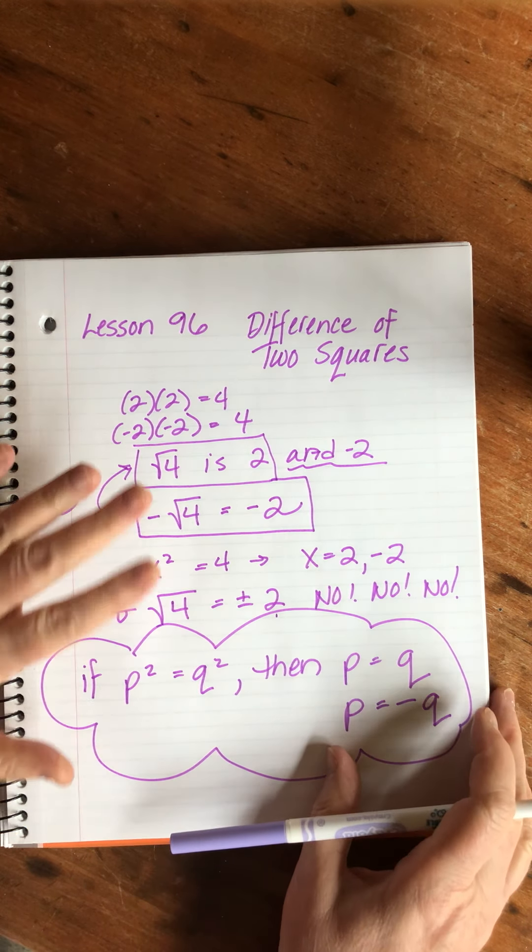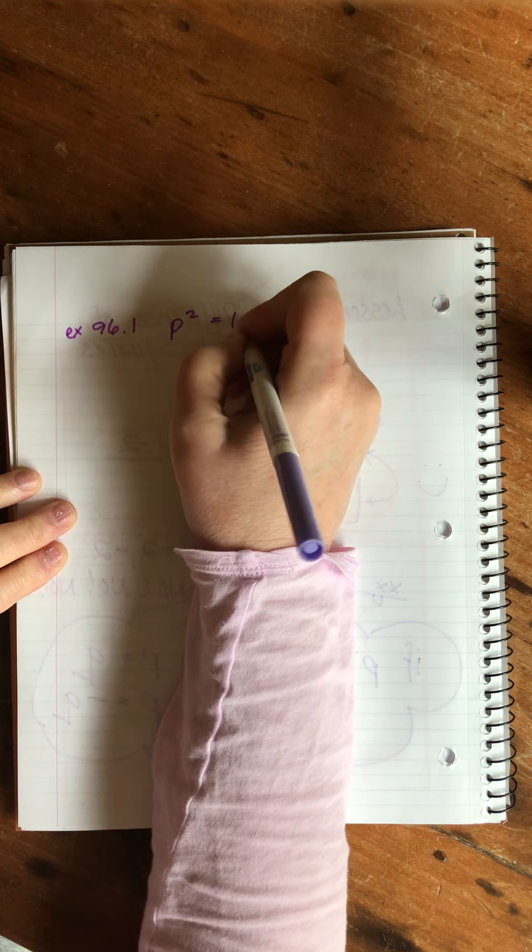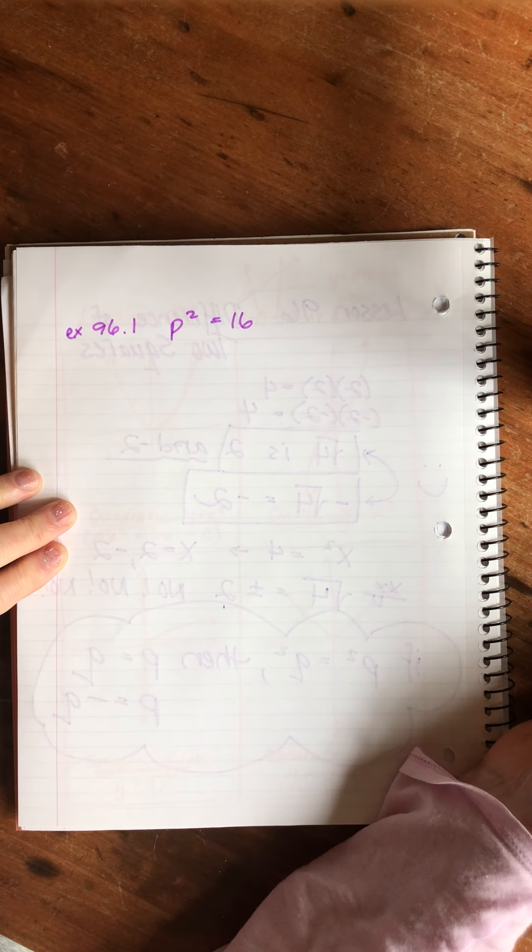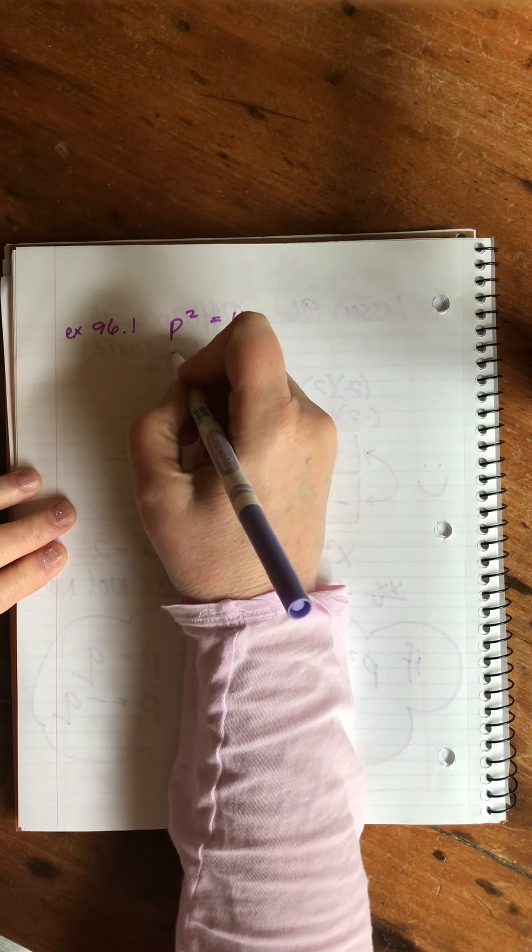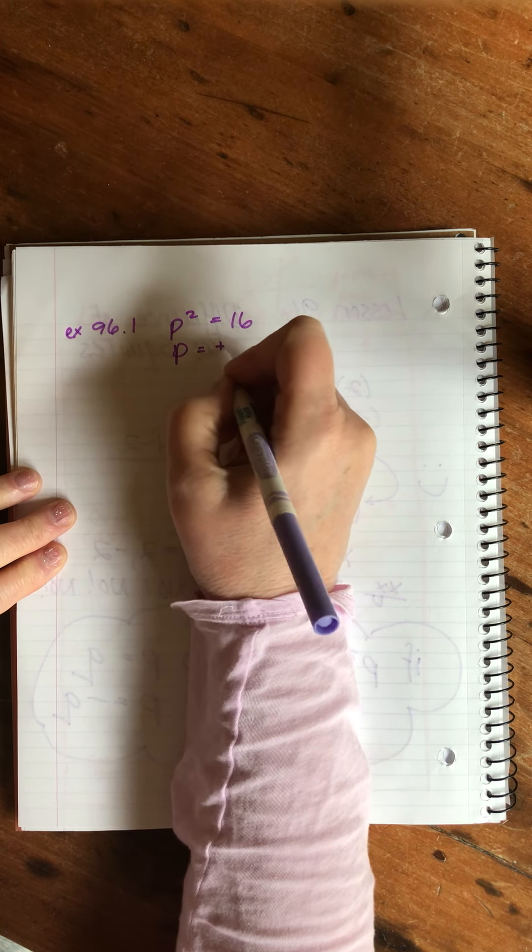For our problems, and there are only three of them and they're really fast, so buckle in. This isn't going to last long. P squared equals 16.